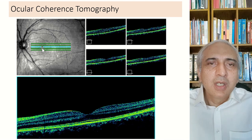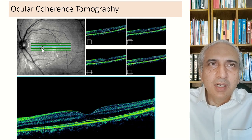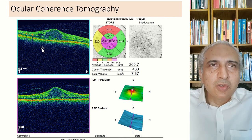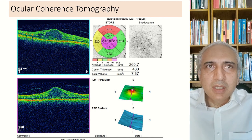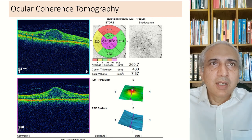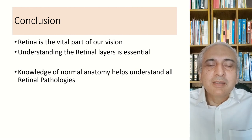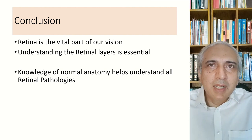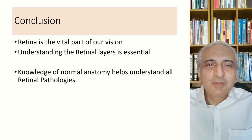It is important to take multiple OCT slices since pathology may be present in one area but not another. OCT can demonstrate cystoid macular edema — a central elevation of the foveal contour with fluid in the foveal area — seen in diabetic retinopathy. In conclusion, the retina is one of the most vital parts of our vision, and understanding retinal layers is essential for interpreting retinal pathologies and investigations such as fundus fluorescein angiography and optical coherence tomography.